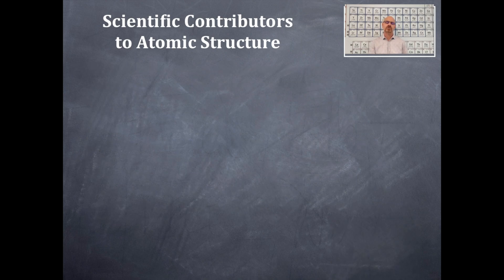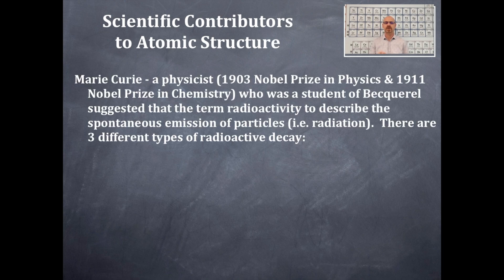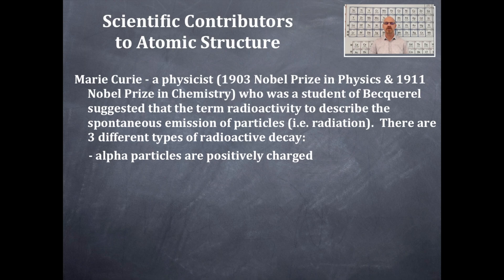Another scientist extremely important to the basics of atomic structure was Marie Curie. She's a physicist and one of the few individuals to have received two Nobel Prizes — one in physics and one in chemistry. She was a student of Becquerel and suggested that the term 'radioactivity' be used to describe the spontaneous emission of particles, that is, radiation. There are three different types of radioactive decay which we'll discuss later.